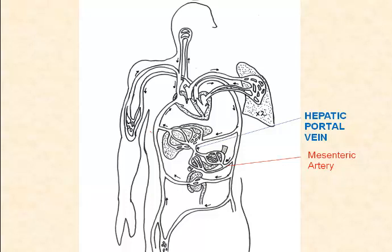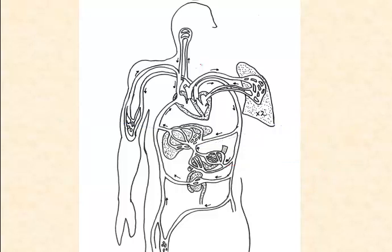The liver needs to process those nutrients. Rather than putting them into general circulation where they become diluted, they go directly to the liver in high concentration so that the liver can efficiently deal with them. All the blood that enters the liver — whether through the hepatic portal vein or the hepatic artery — leaves via the hepatic vein and goes back into general circulation. So we've had a look at some of the major blood vessels in the human body, and you should spend some time memorizing them.